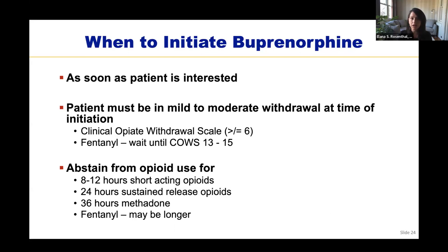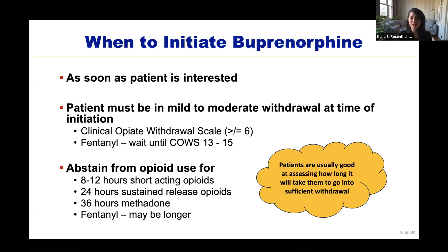Initiating buprenorphine in the fentanyl era can be trickier because fentanyl is so lipophilic and sticks around for a while. Some recommend waiting until fentanyl users have a COWS score of even up to 13 to 15. In general, patients will be in sufficient withdrawal when they abstain from opioid use for 8 to 12 hours with short-acting opioids, 24 hours with sustained-release opioids, 36 hours with methadone, and maybe longer for fentanyl. Patients are usually pretty good at assessing how long it will take them to go into sufficient withdrawal.